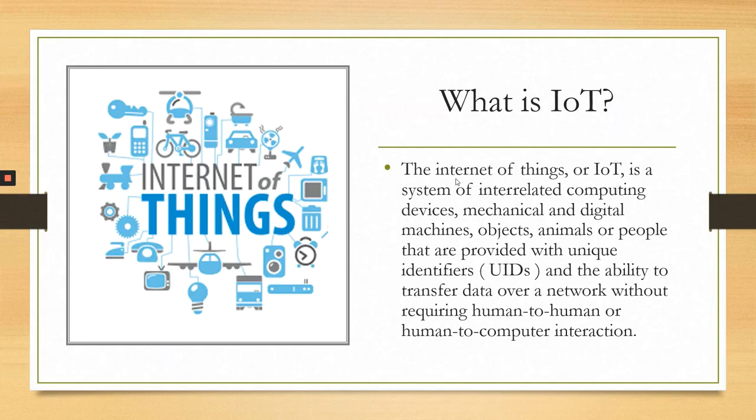Firstly, I will explain to you what is IoT. The Internet of Things, or IoT, is a system of interrelated computing devices, mechanical and digital machines, objects, animals, or people that are provided with unique identifiers and the ability to transfer data over a network without requiring human-to-human or human-to-computer interaction.